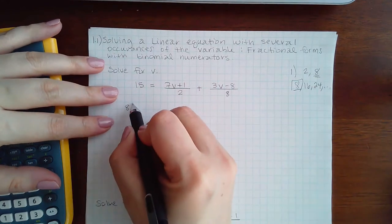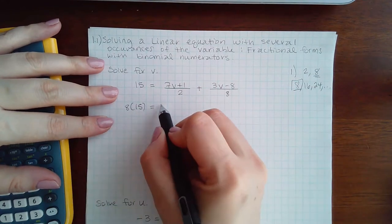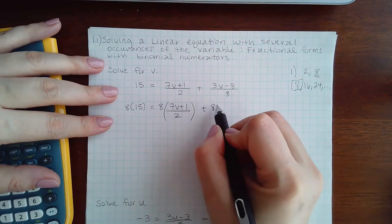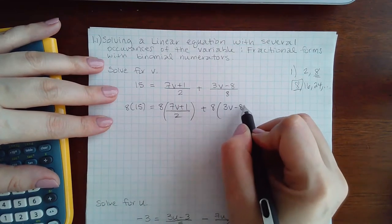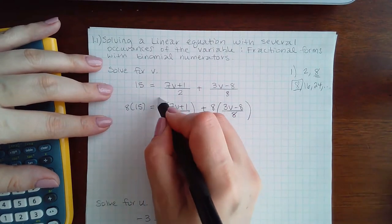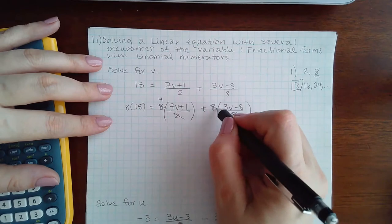So I'm going to do 8 times 15. I'm going to do 8 times this giant fraction plus 8 times this giant fraction. And then we're going to reduce. 2 goes into 8 4 times. 8 goes into 8 1 time.